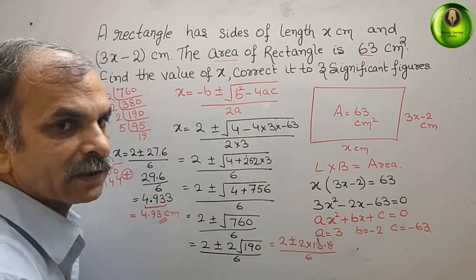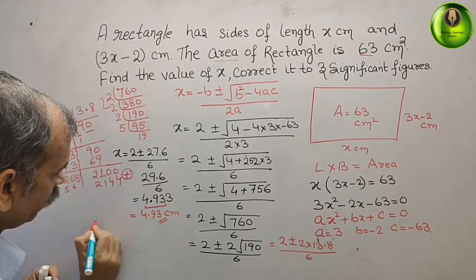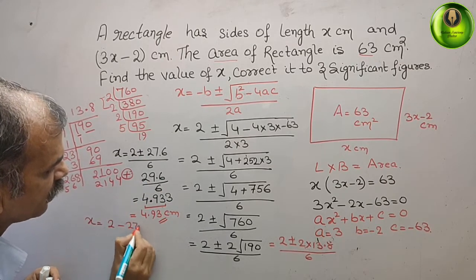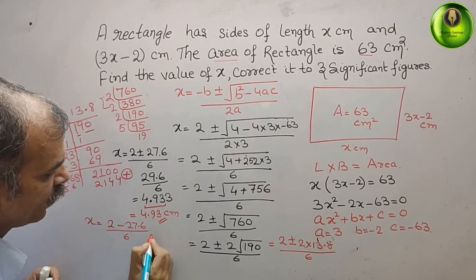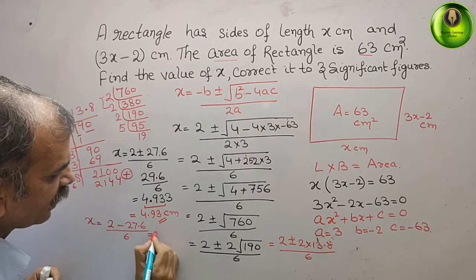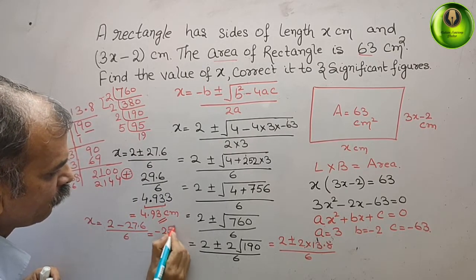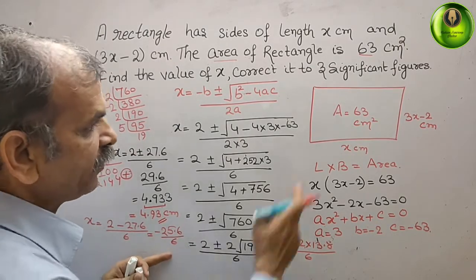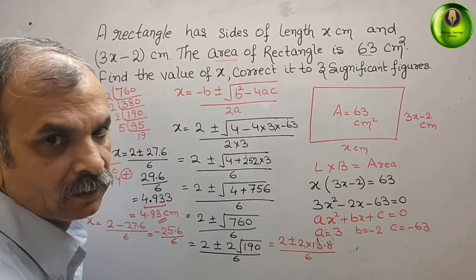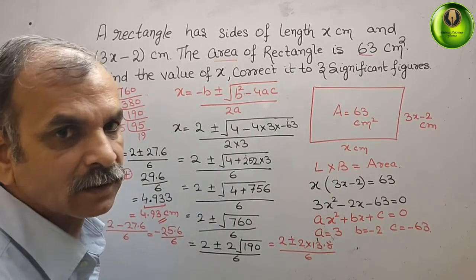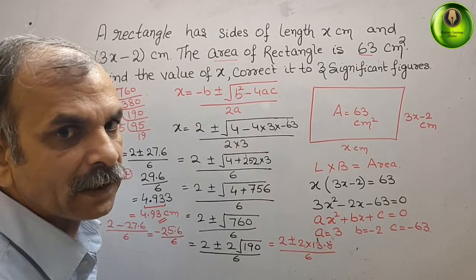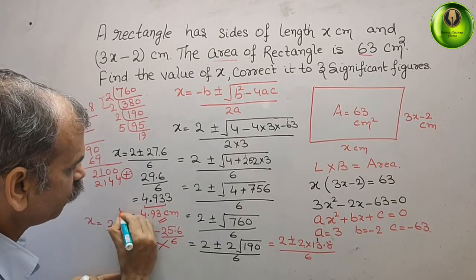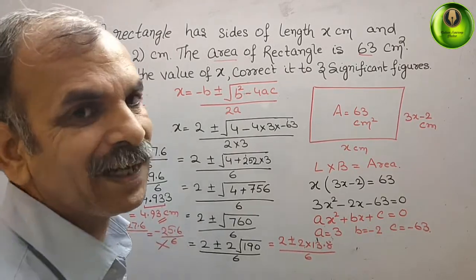Next, we will take a minus sign. So, what we will get? x is equal to, 2 minus 27.6 by 6. That is equal to, we can say, it is a minus 25.6 by 6. Now, you can see the figure. This is your rectangle. And, our length should not be in minus. Length should not be in minus. Therefore, we will ignore this. Therefore, our answer is, only 4.93 cm is our length.